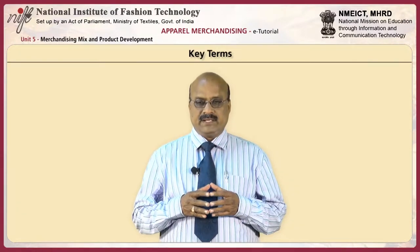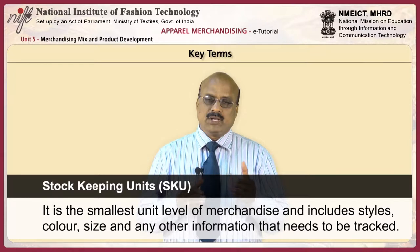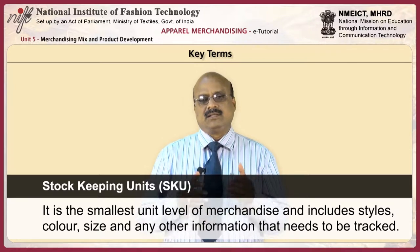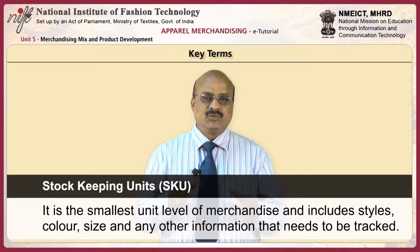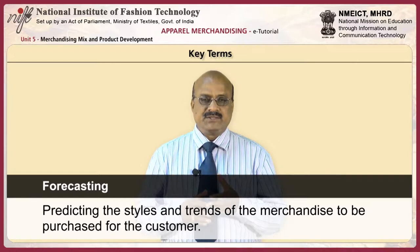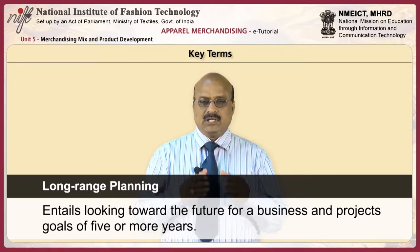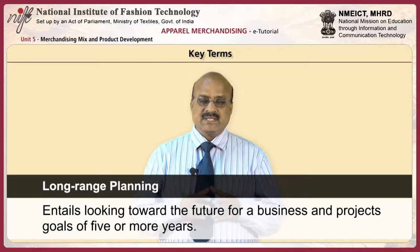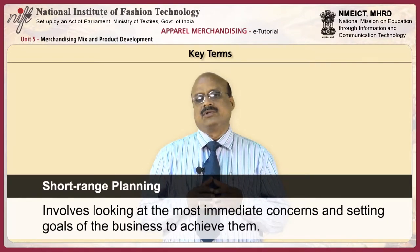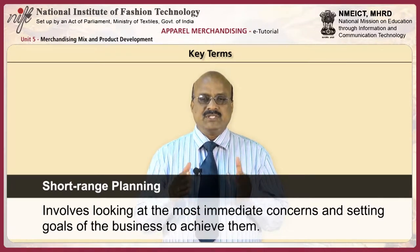Before we go further, let us review some key terms used in merchandising. Stock keeping unit SKU is the smallest unit level of merchandise and includes styles, color, size and any other information that needs to be tracked. Forecasting involves predicting the styles and trends of the merchandise to be purchased for the customer. Long range planning entails looking toward the future for a business and projecting goals of five or more years. Short range planning involves looking at the most immediate concerns and setting goals of the business to achieve them.